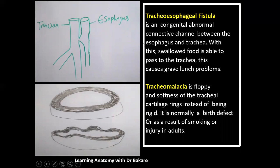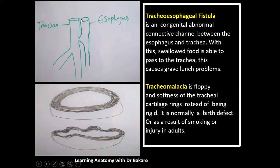Tracheoesophageal fistula is a congenital abnormality occurring when the oesophagus becomes connected to the trachea during fetal development. The trachea and oesophagus originate from a single primitive tube that normally divides completely; incomplete division results in food entering the lungs. Tracheomalacia refers to floppiness or softness of the tracheal cartilages, causing collapse of the tracheal wall, and can result from smoking or other forms of injury.